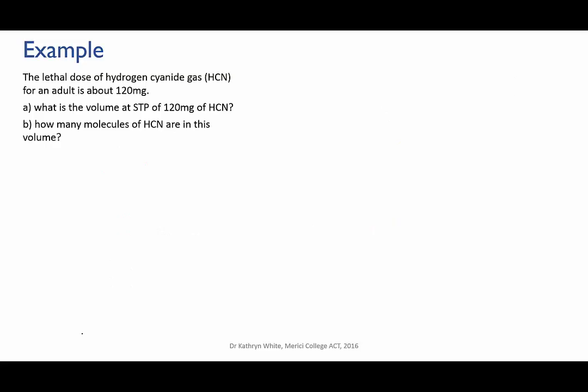Let's try another one. The lethal dose of hydrogen cyanide gas, which has the formula HCN, for an adult is about 120 milligrams. First of all, I want to know what's the volume at STP of 120 milligrams of HCN. And then we'll work out how many molecules of HCN are in this volume. So let's take this first problem first.